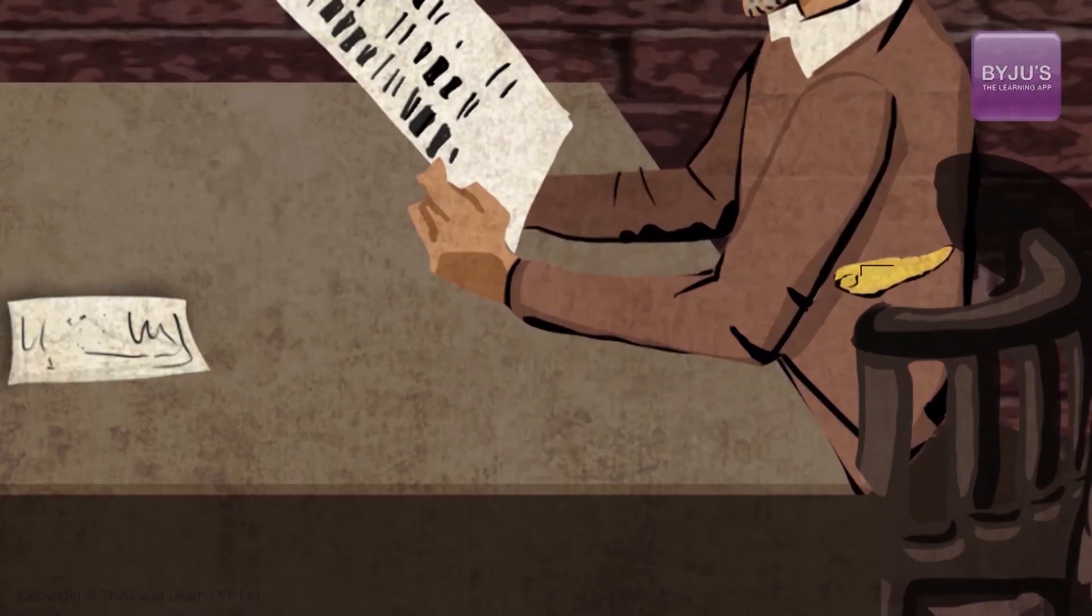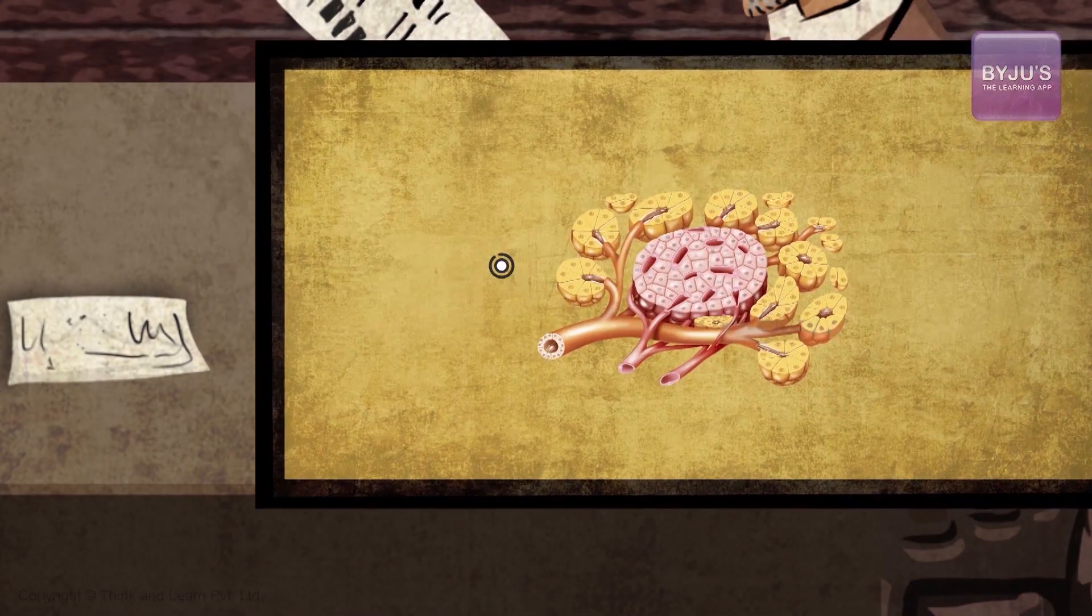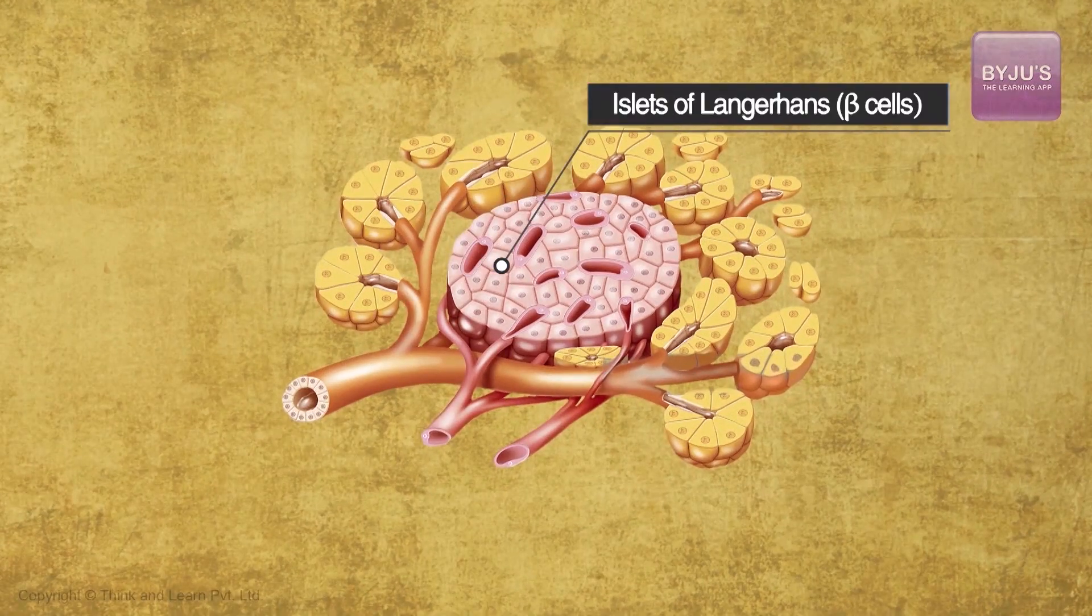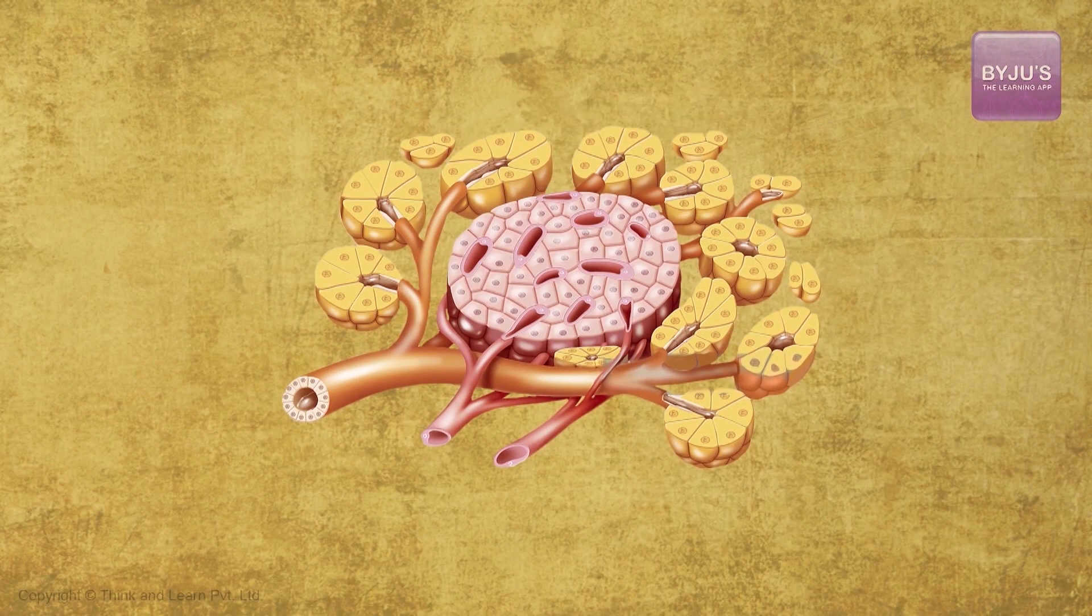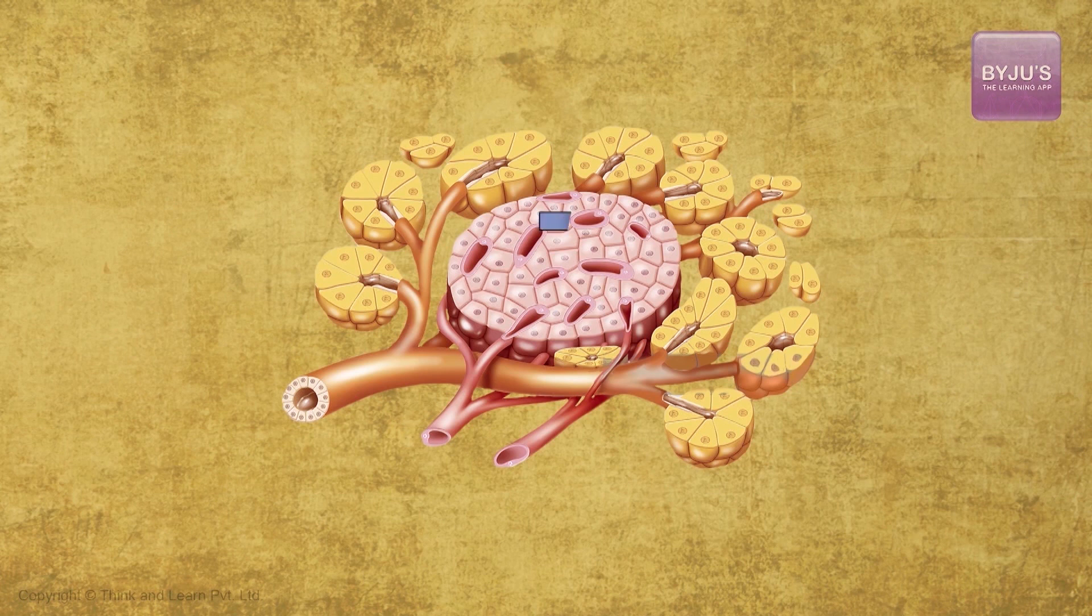In the body, both insulin chains are first synthesized in the beta cells of the Langerhans islets of the pancreas as parts of a longer chain of 110 amino acids.